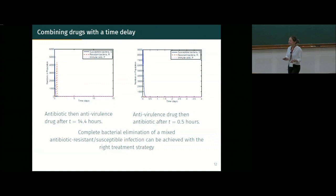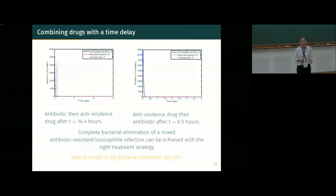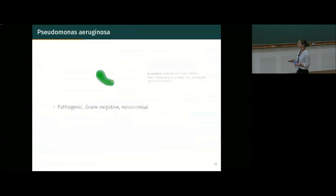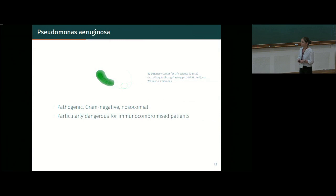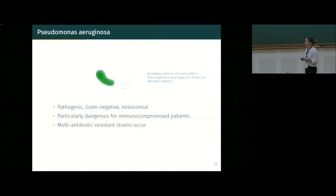If you administer both drugs simultaneously, you deal with many bacteria at once but the immune response drops too much, leaving it unable to fully clear the resistant bacteria. Taking the immune response into account is crucial. The model predicts complete elimination of a resistant infection with the right treatment strategy, though the correct strategy depends on the treatment, infection, and patient. We used this as preliminary evidence to obtain a BBSRC grant to study specific anti-virulence treatments, focusing on Pseudomonas aeruginosa — a pathogenic gram-negative nosocomial infection, particularly dangerous for immunocompromised patients and burn wound patients.